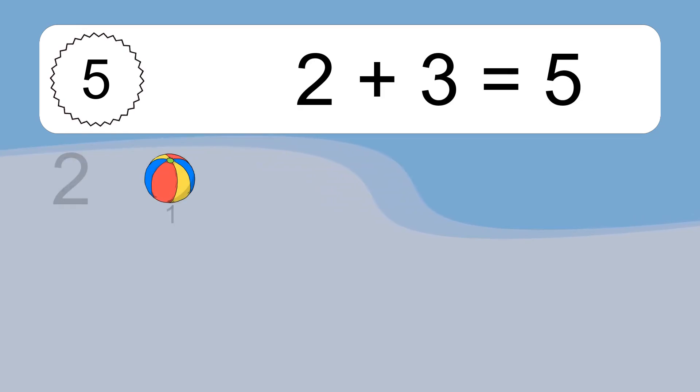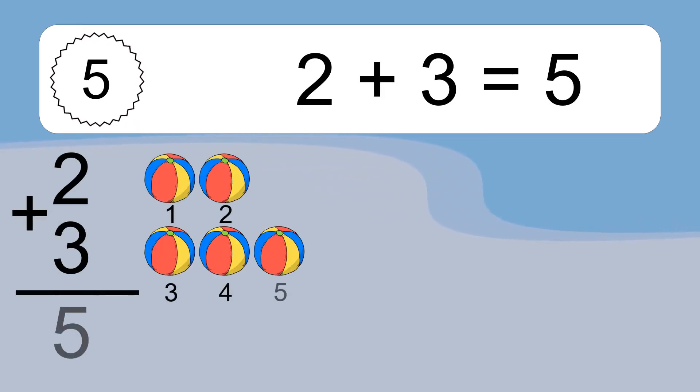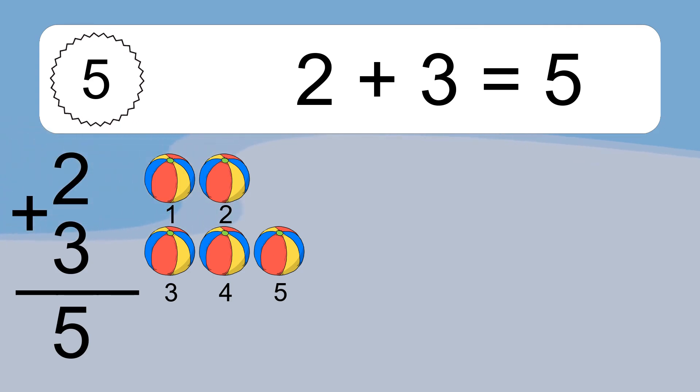2 plus 3 equals what? 2 plus 3 equals 5. Let's count it: 1, 2, 3, 4, 5.